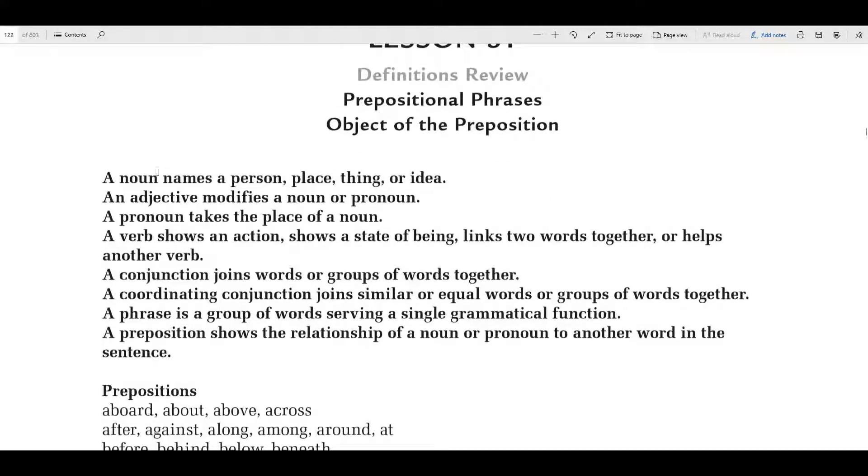Right up here's your little definitions. Tells what things do: noun, adjective, pronoun, verb, conjunction. A coordinating conjunction joins similar or equal words. A phrase is a group of words. Preposition. These are just things you might want to know. You can jot this down on a piece of paper or highlight them or whatever you want to. Cut them out and put them on the ceiling so you see them first thing in the morning and you dream about prepositions.